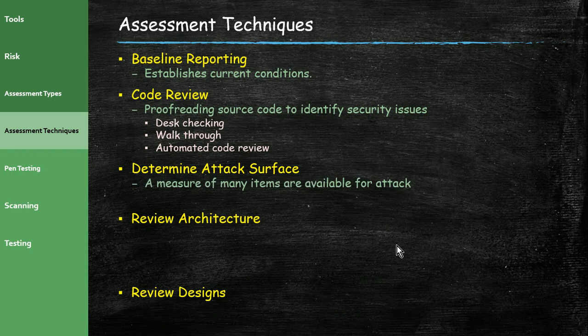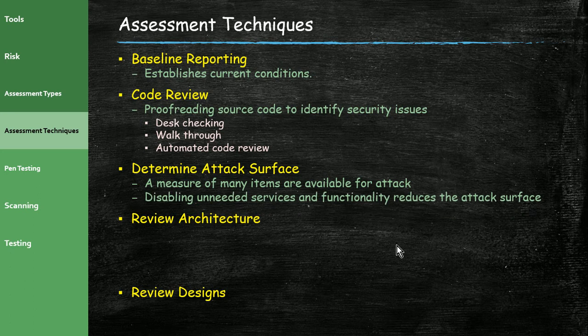Determining the attack surface is a measure of how many items are available for attack. Disabling unneeded services and functionalities reduces the attack surface. If a system has 50 different services running, that's a large attack surface. By reducing the number of services and things on that server, you reduce the number of ways it can be attacked.